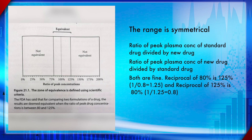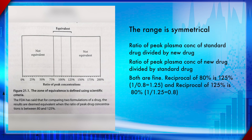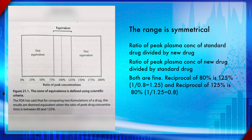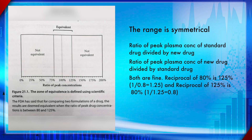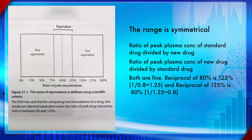Only B and C qualify, not A. Drug A's proportion (the ratio of standard drug vs. new drug) is within range, but its 90% confidence interval is too wide and falls outside that range, so it is not bioequivalent. For B and C, the entire 90% confidence interval is within the equivalence zone.